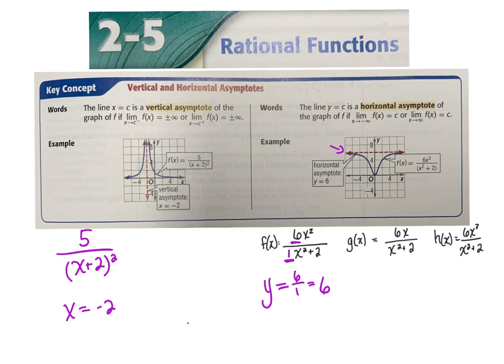If the numerator's degree is smaller than the denominator's degree — for example, degree 1 on top and degree 2 on the bottom — then the horizontal asymptote will always be y equals 0, the x-axis. For the third function, where the numerator's degree is larger than the denominator's degree, there is no horizontal asymptote. It does not exist.